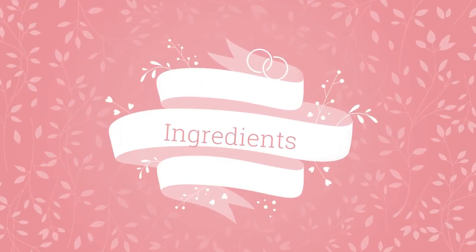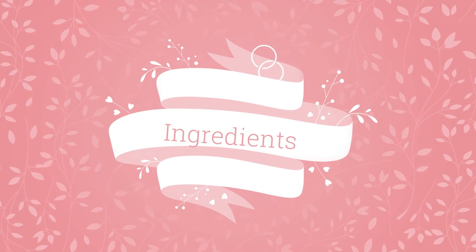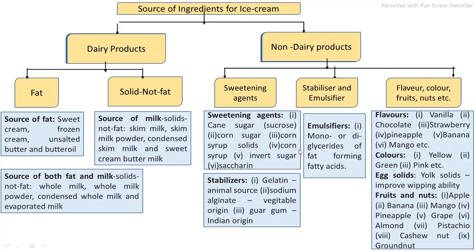The main ingredients required for the ice cream manufacturing process are divided into two groups: dairy ingredients and non-dairy ingredients. Non-dairy ingredients include the sweetening agent (sugar), additives such as stabilizing and emulsifying agents, and flavoring, coloring, or other ingredients.